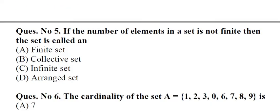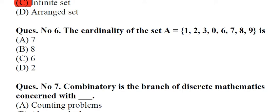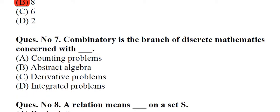Question number 5: If the number of elements in a set is not finite then the set is called an A. Finite set, B. Collective set, C. Infinite set, D. Arranged set. Answer: C, Infinite set. Question number 6: The cardinality of the set A equals 1, 2, 3, 0, 6, 7, 8, 9 is A. 7, B. 8, C. 6, D. 2. Answer: B, 8.